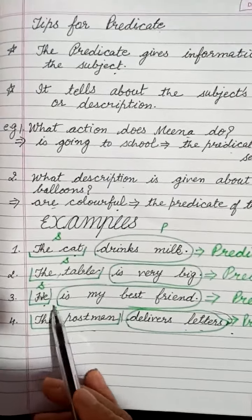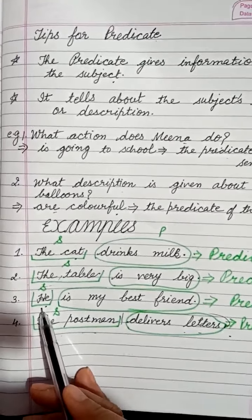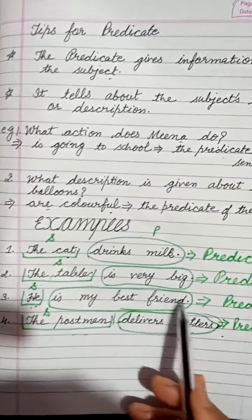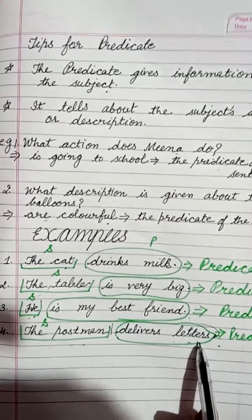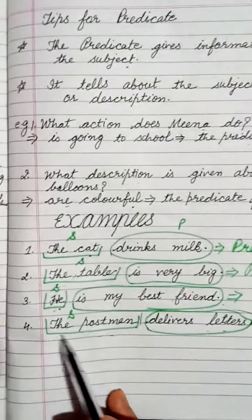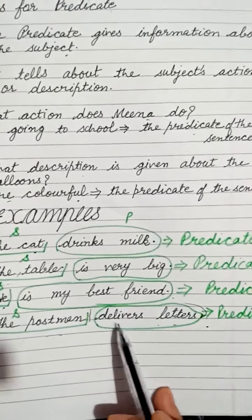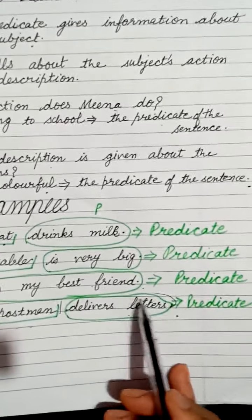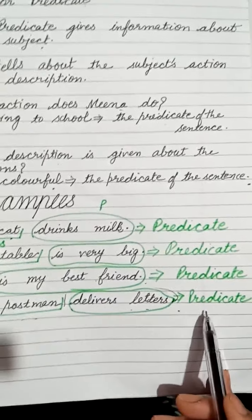In the third sentence: 'He is my best friend.' If we ask who is my best friend, the answer is he — he is the subject. 'Is my best friend' is the predicate. In the fourth sentence: 'The postman delivers letters.' Who delivers letters? The postman — the postman is the subject. And what action does the postman do? Delivers letters — that is the predicate.